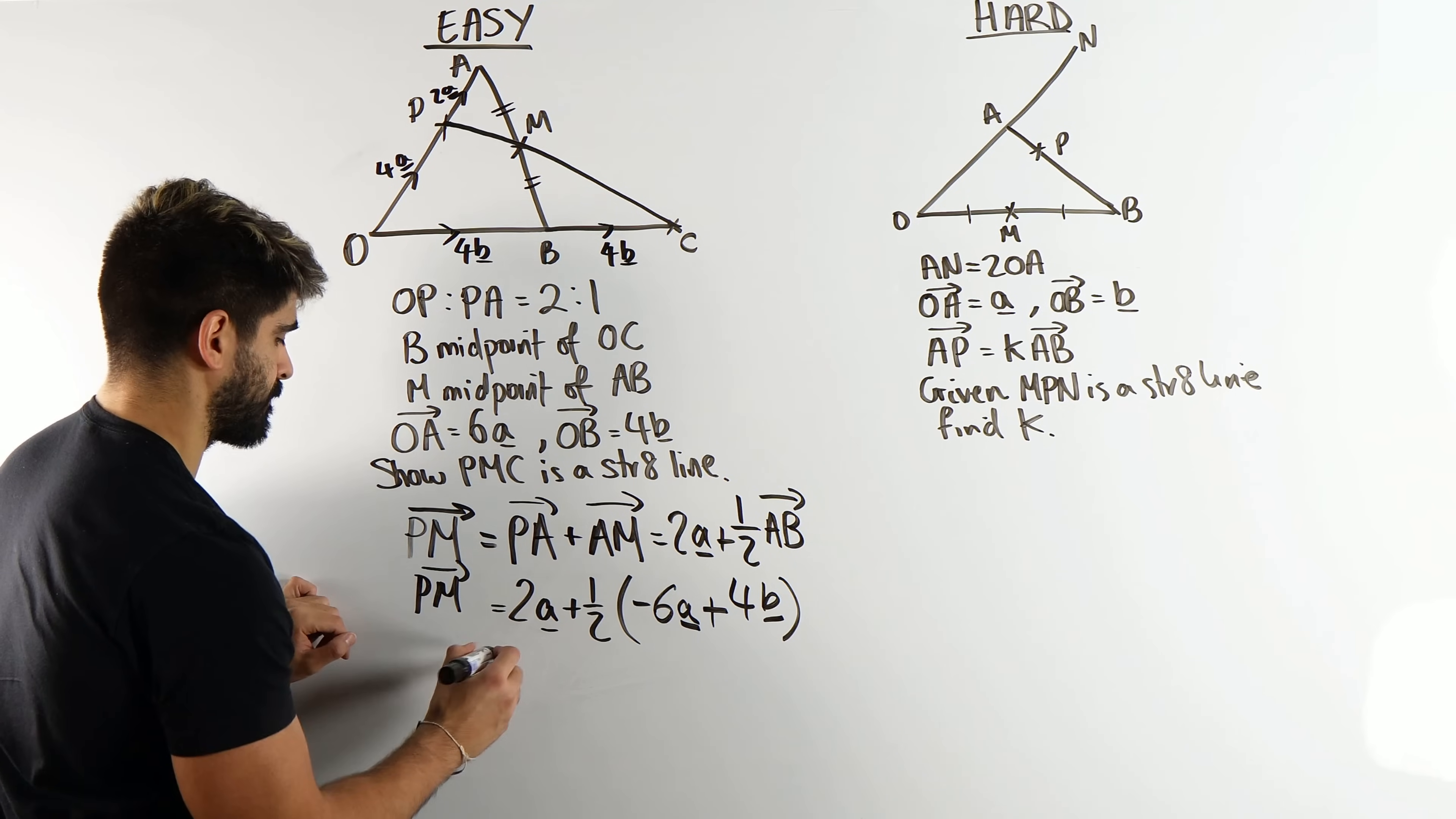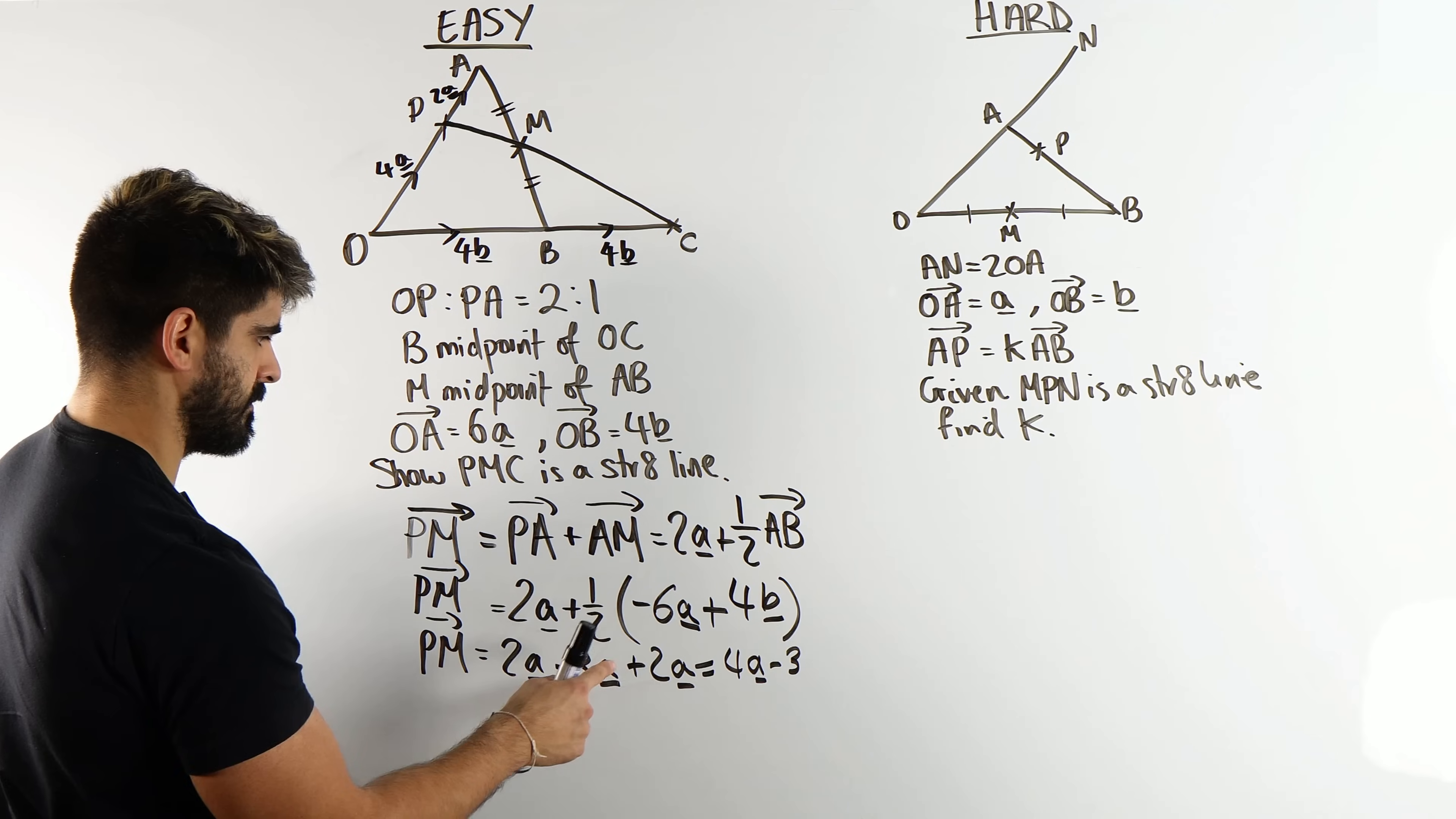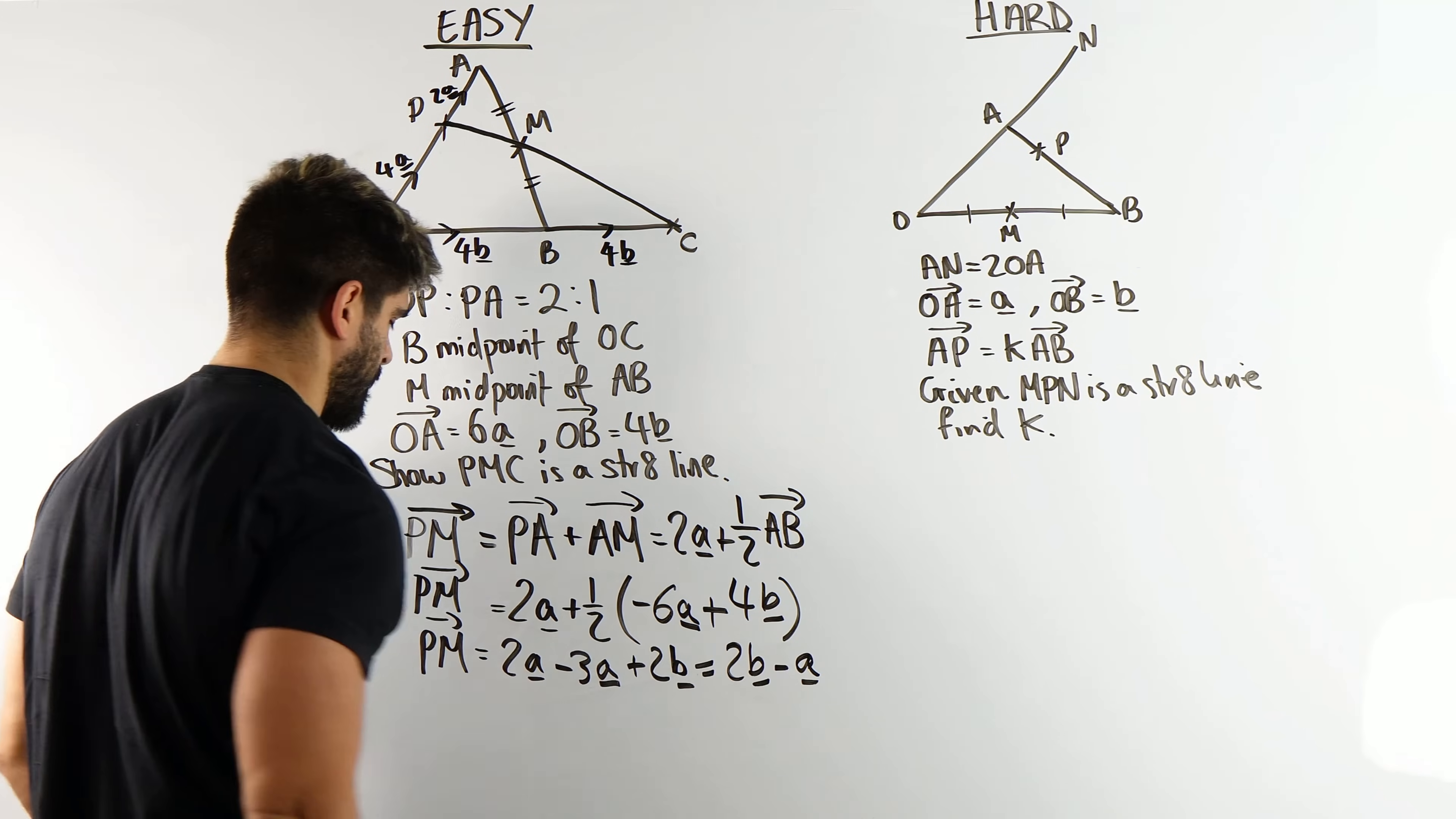And now we're going to expand that. So that is P to M still. P to M is 2A, half of that minus 3A, and then half of that is 2B. So we are left with minus A plus 2B, or 2B minus A. So that's P to M.